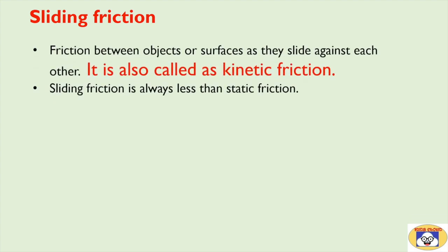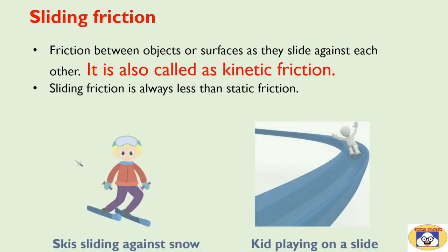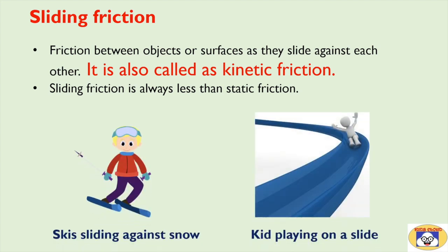Sliding friction is friction between objects or surfaces as they slide against each other. It is also called kinetic friction. Sliding friction is always less than static friction. Skis sliding against snow or a kid playing on a slide are examples of sliding friction.